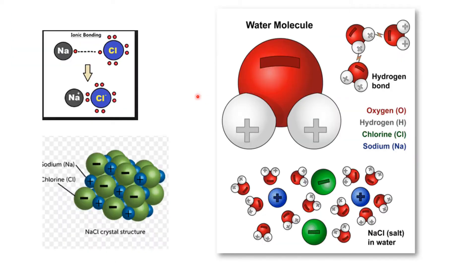Let's start with ionic compounds. Here I've taken the example of NaCl. We already know how NaCl is formed: the sodium atom gives one electron and changes into a sodium positive ion, and that electron is gained by the chlorine atom, which becomes a chloride ion. The interaction between the sodium ion and the chloride ion is called ionic bonding.